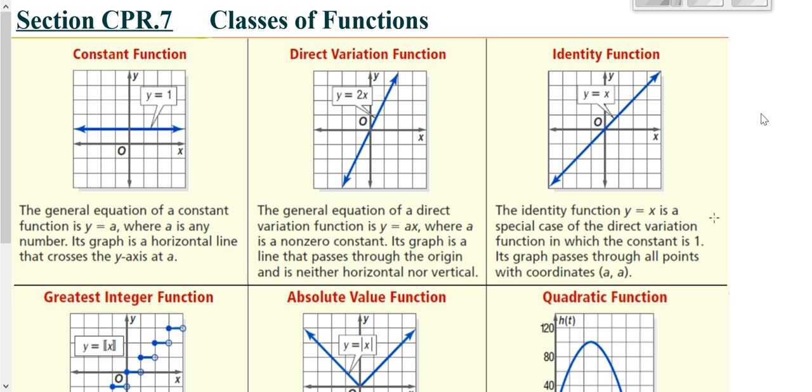Top center is direct variation. We just talked about that in the last lesson. Direct variation is a special line that goes through the origin, so it's got to be a line with a y-intercept of zero.